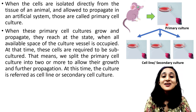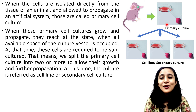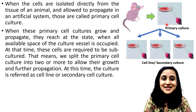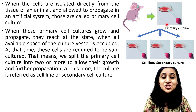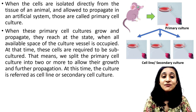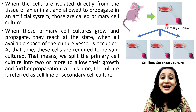When these primary cell cultures grow and propagate, they reach a state when all the available space of the culture vessel is occupied, because cells undergo continuous cell division. As the cells divide continuously, they occupy all the available space. At that point, these cells are required to be subcultured — that means we split the primary cell culture into two or more to allow their growth and further propagation, basically providing those cells more space to grow.